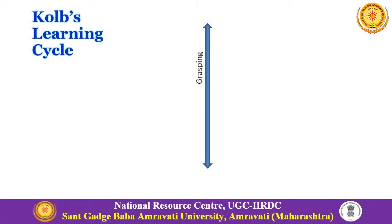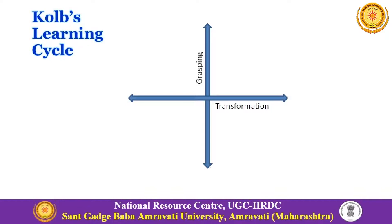In this session we are going to look at Kolb's learning cycle. We need to understand that the learning process is about grasping some information — collecting some information — and doing something about it, meaning transforming that information. There are different ways people grasp or transform information.